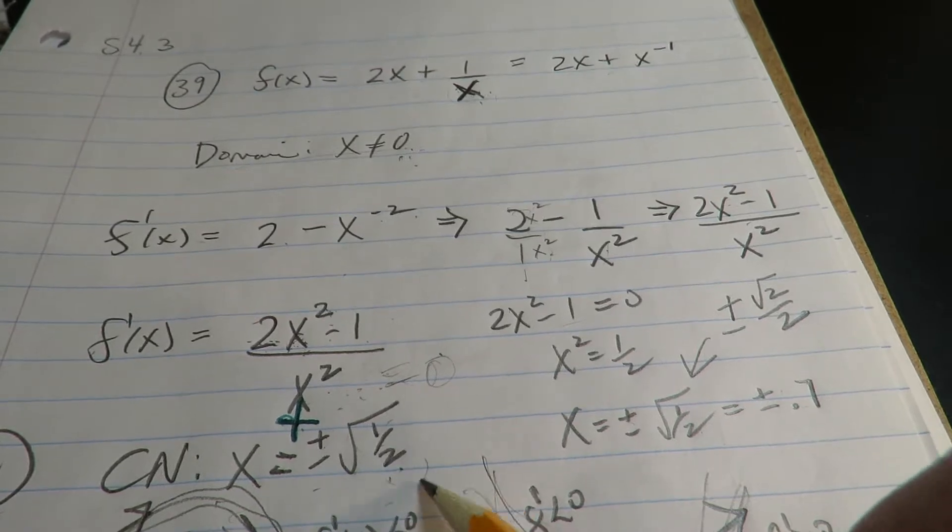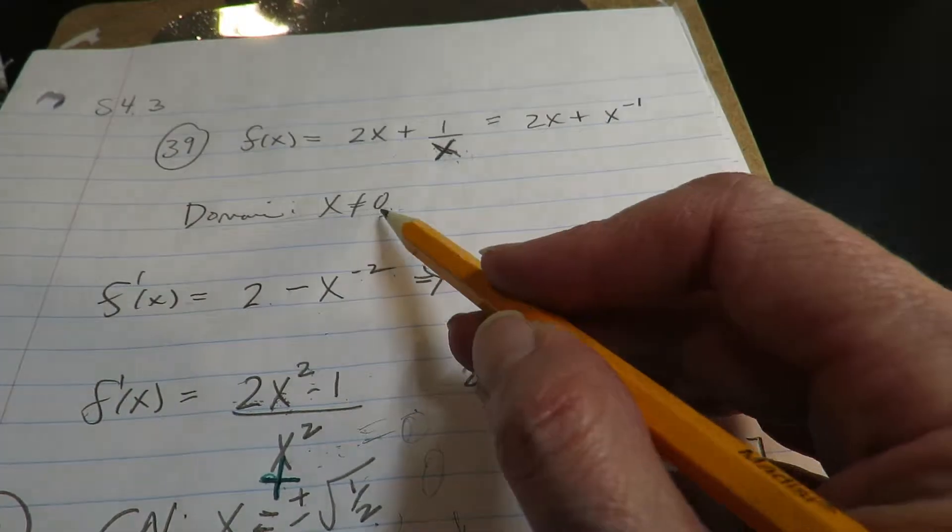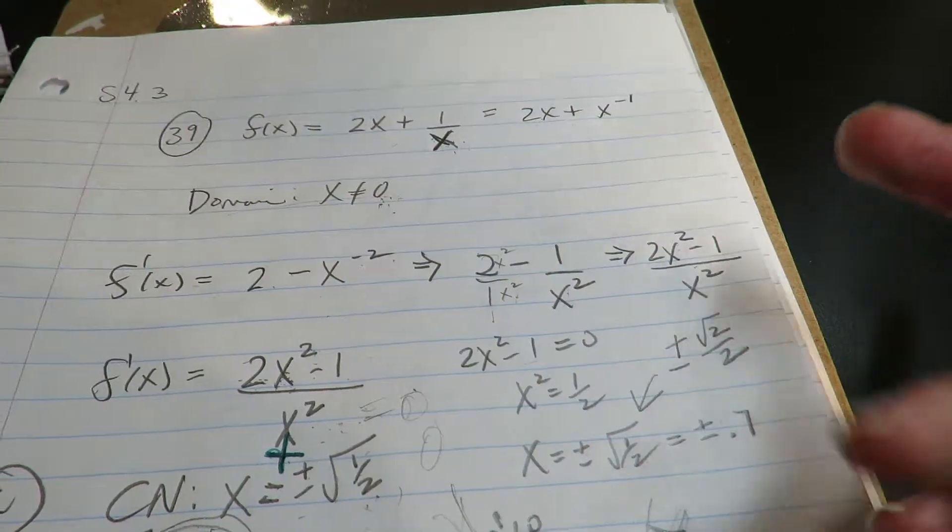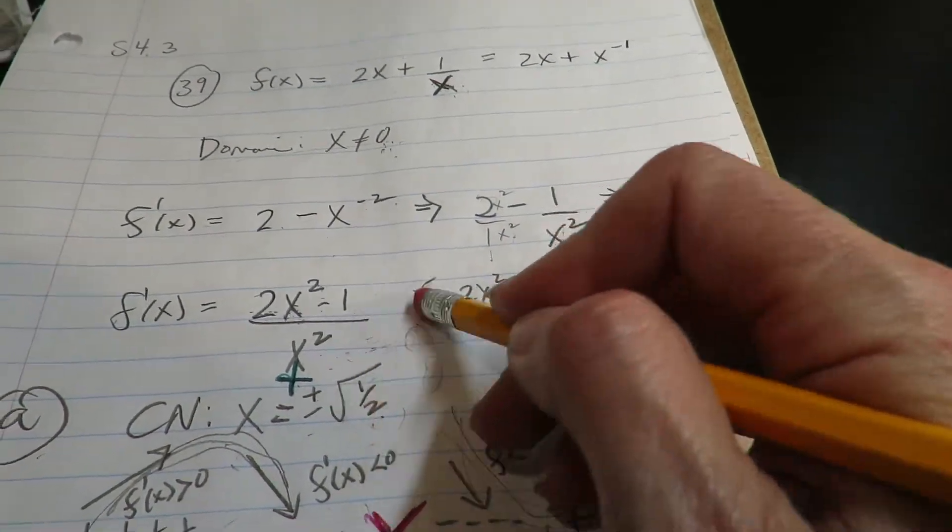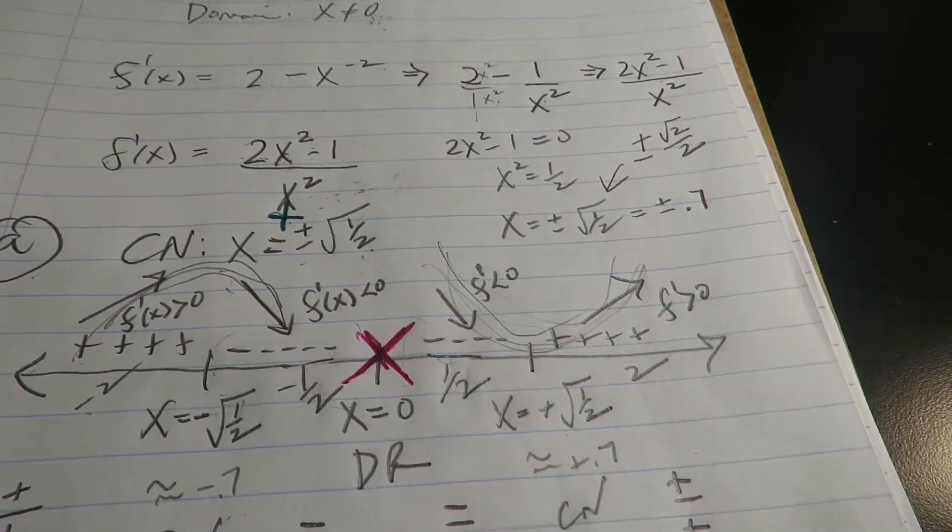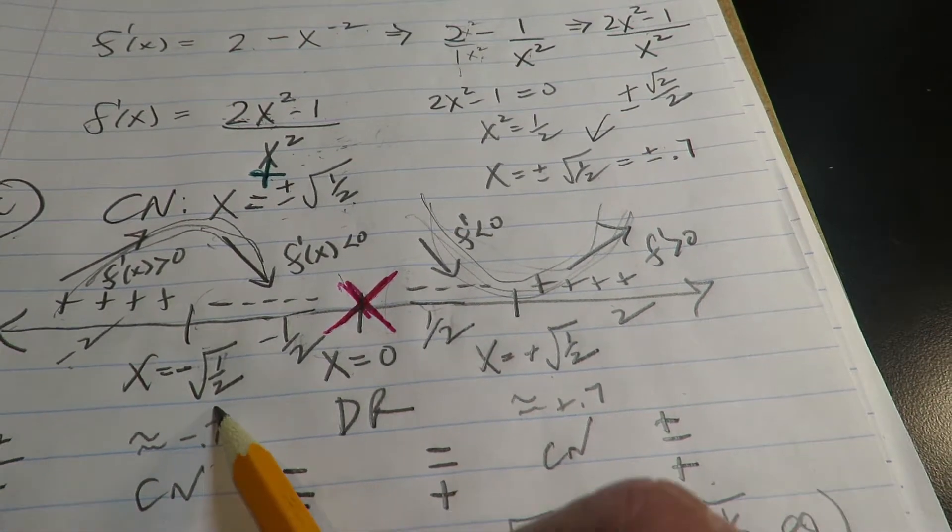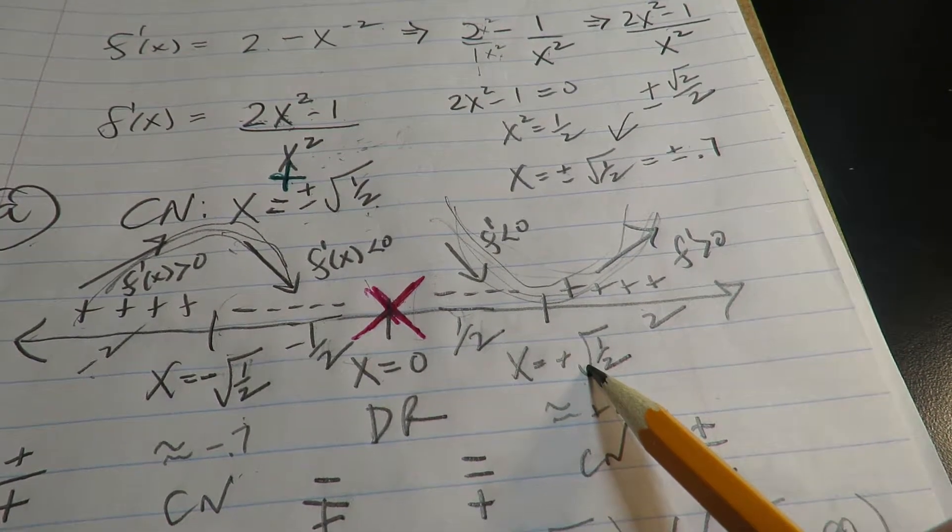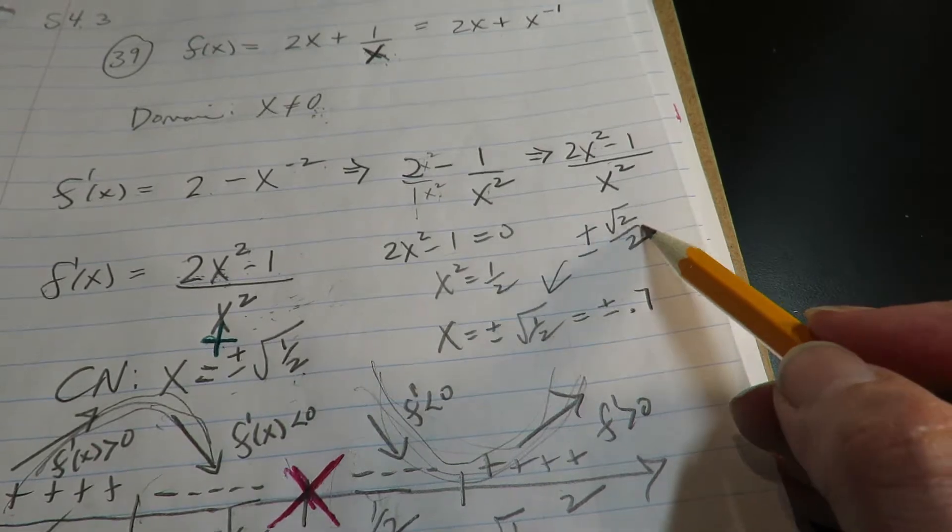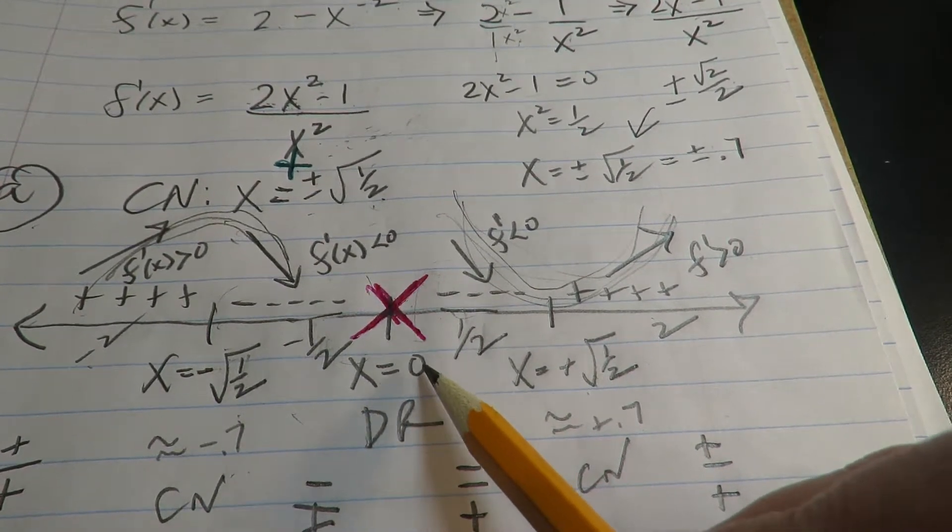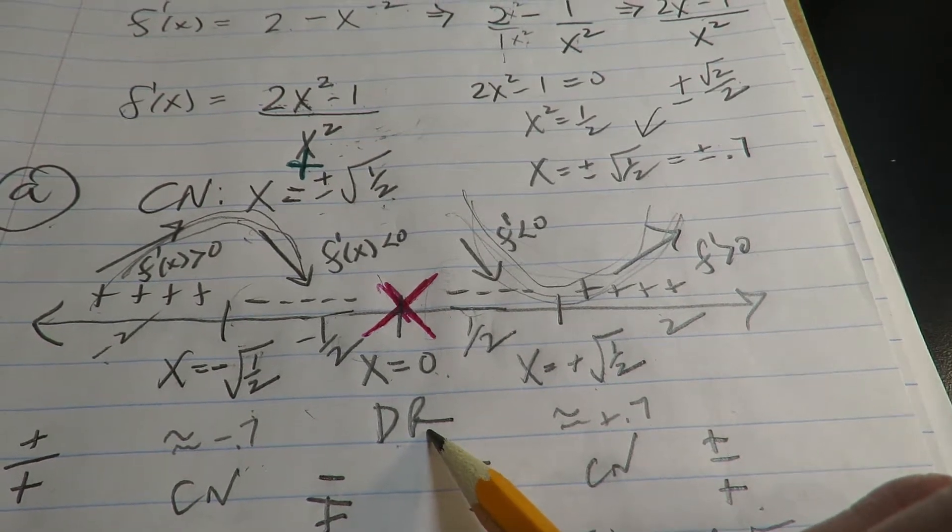So when I wrote out my critical number, I couldn't put zero here because we can't use zero. There is no zero on the function. There's a vertical asymptote there. There's no graph. So then I put up my critical number here and here, the plus or minus radical one half. Again, you could write it like that if you prefer. And you also, real important, you also have to put in your domain restriction.